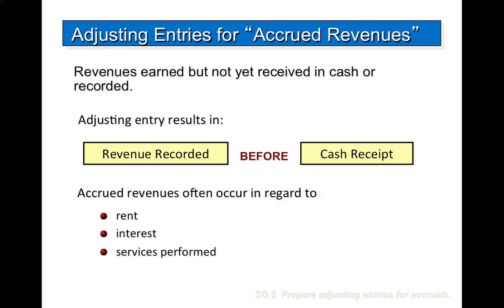These may be unrecorded because only a portion of the total service has been provided and the clients won't be billed until the service has been completed. An adjusting entry records the receivable that exists at the balance sheet date and the revenue earned during the period. Prior to adjustment, both assets and revenues are understated. An adjusting entry for accrued revenues results in an increase — a debit — to an asset account and an increase — a credit — to a revenue account.